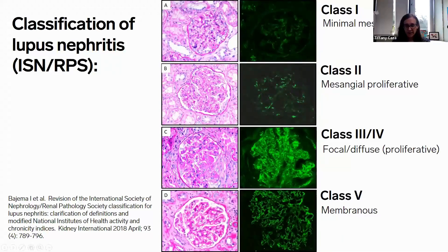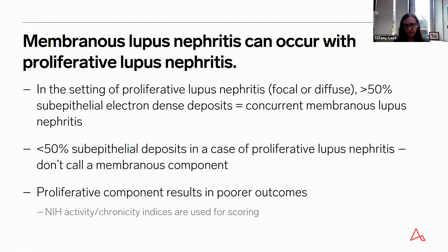Membranous lupus nephritis, class five, has an appearance of membranous nephropathy on biopsy with thickened glomerular capillary loops and corresponding subepithelial IgG deposition. Membranous lupus nephritis can occur concurrently with proliferative lupus nephritis, either class three or class four. If there are greater than 50% subepithelial electron-dense deposits along the glomerular capillary loop, it is consistent with a concurrent membranous component. If less than 50%, you do not call a concurrent membranous component, as subepithelial immune deposition can occur in the setting of proliferative lupus nephritis alone.